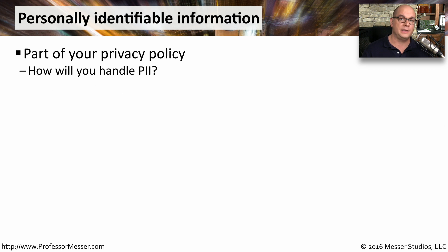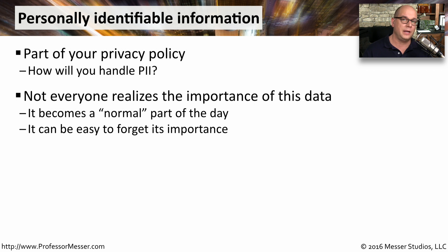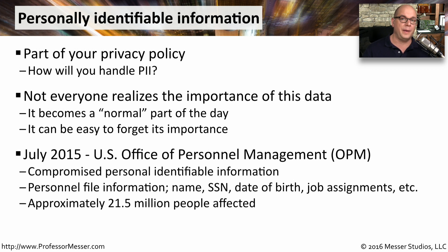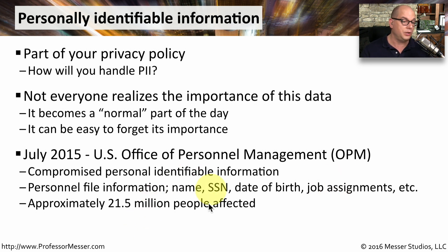One very significant set of policies in your organization should revolve around how you handle personally identifiable information, or PII. In many organizations, PII is tightly controlled, and in others the personal information isn't kept at all. If you work with PII every day, you can sometimes forget how important it is to maintain a level of security of that information. A good example of when personal information can get out happened in July of 2015 at the US Office of Personnel Management. Personally identifiable information was released that contained name, social security number, date of birth, job assignments, and other details of people who worked for the US government. Approximately 21 and a half million people had this personal information released, making it a significant release of PII.